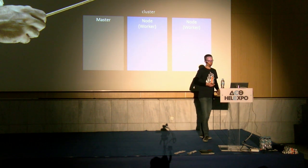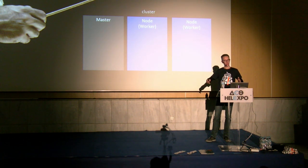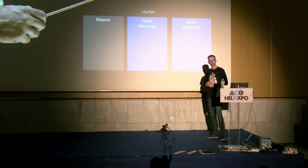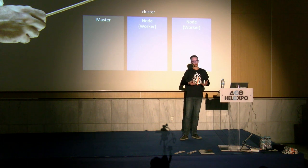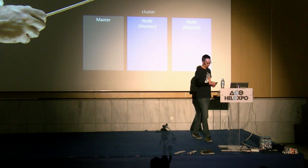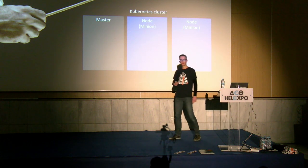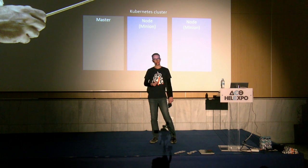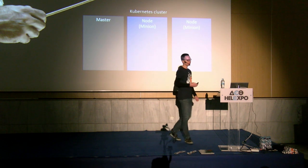All container orchestrators look more or less the same: they have a cluster of machines consisting of a master and several worker nodes. The worker nodes do the work — they run the Docker images. The master manages the cluster. For Kubernetes this is no different. Note: in older articles you may see 'minions' — that's the old term for nodes in Kubernetes terminology.